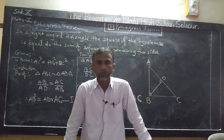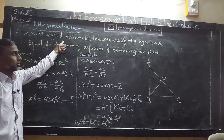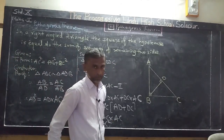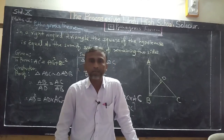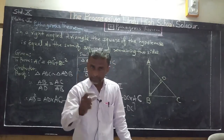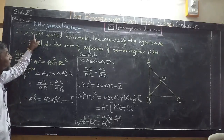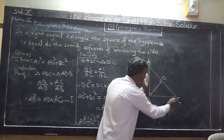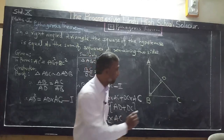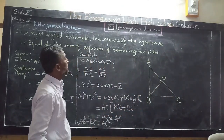Now I am going to prove Pythagoras theorem. Statement: in a right-angled triangle, the square of the hypotenuse is equal to the sum of the squares of the remaining two sides. When writing the theorem, follow the steps: write what is given, what you have to prove, construction, and then proof. What is given: triangle ABC is a right-angled triangle in which angle ABC = 90 degrees.